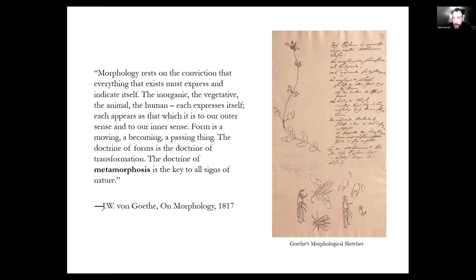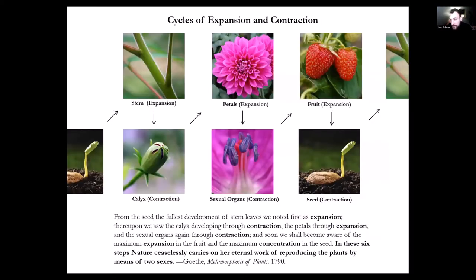For Goethe, all organic forms operate under the concept of metamorphosis — a dynamic principle articulated primarily in his study of plant morphology, where he describes metamorphosis as alternating cycles of expansion and contraction. In his 1795 essay 'Metamorphosis of Plants,' he describes: from the seed, stem development is expansion; the calyx develops through contraction; petals through expansion; sexual organs through contraction. He finds these alternating forces in the plant organs along the stem.